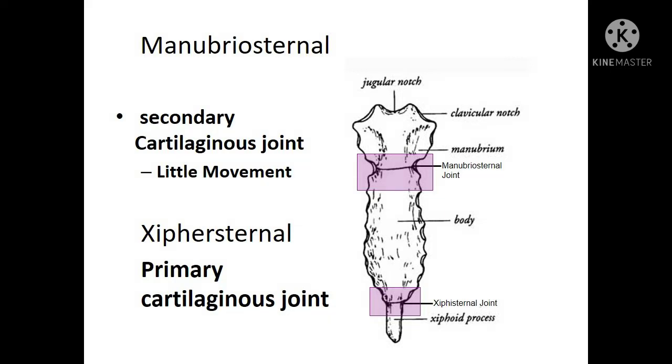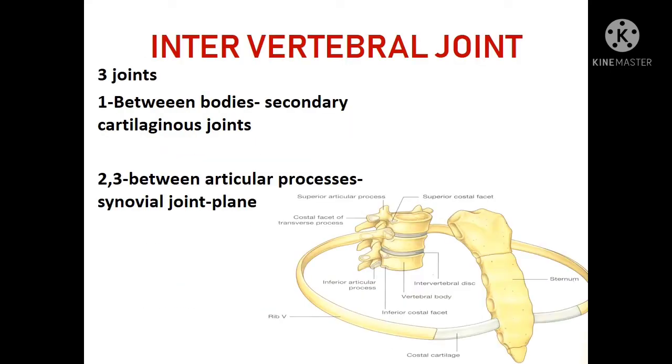The intervertebral joints involve the bodies of the vertebrae and the superior and inferior articular processes. Between the bodies of the vertebrae, they are called secondary cartilaginous joints. Between the articular processes, they are synovial joints, plane variety.